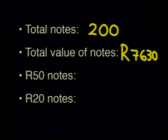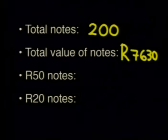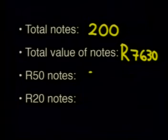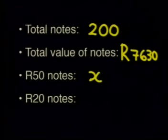We don't know the number of 50 Rand or 20 Rand notes, so we'll use letters to represent these unknowns. Let's say the number of 50 Rand notes is X and the number of 20 Rand notes is Y.